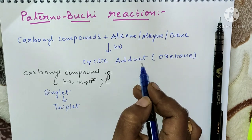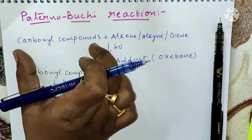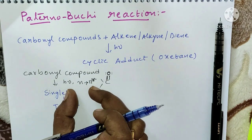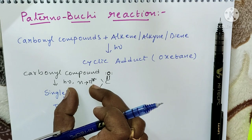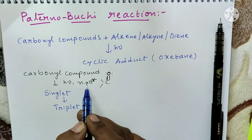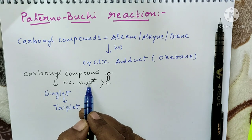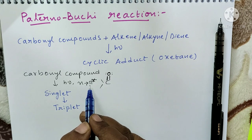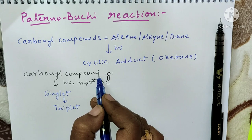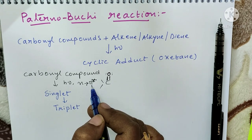The mechanism behind it is: first of all, the carbonyl compound absorbs light radiation and an n→π* transition takes place. n→π* transition means the compounds which have a non-bonded electron and also a π bond undergo n→π* excitation.